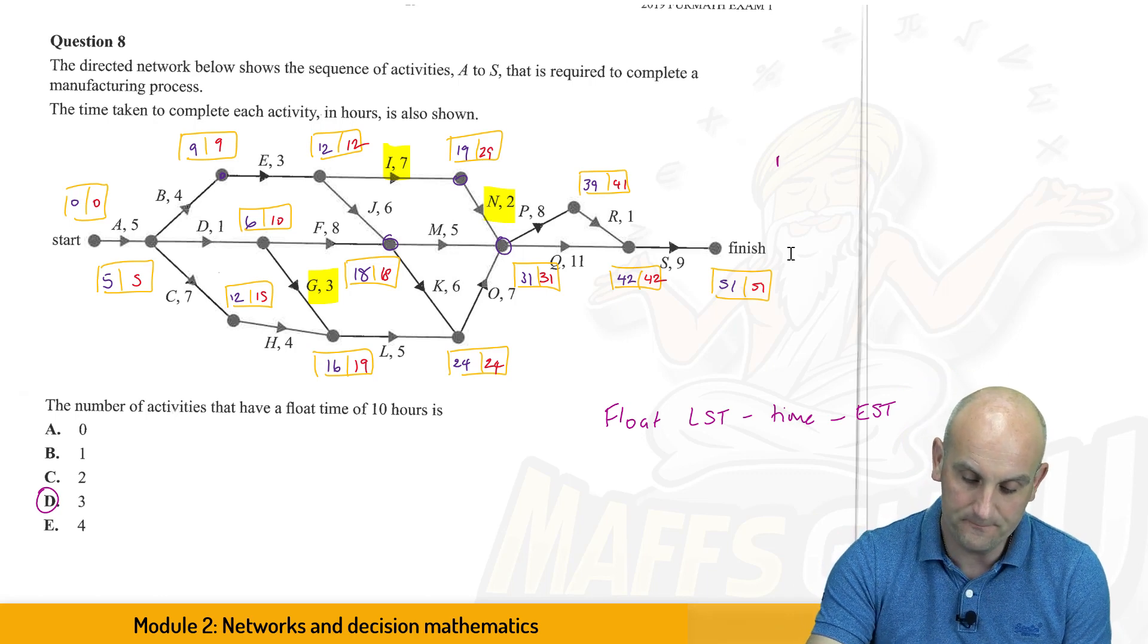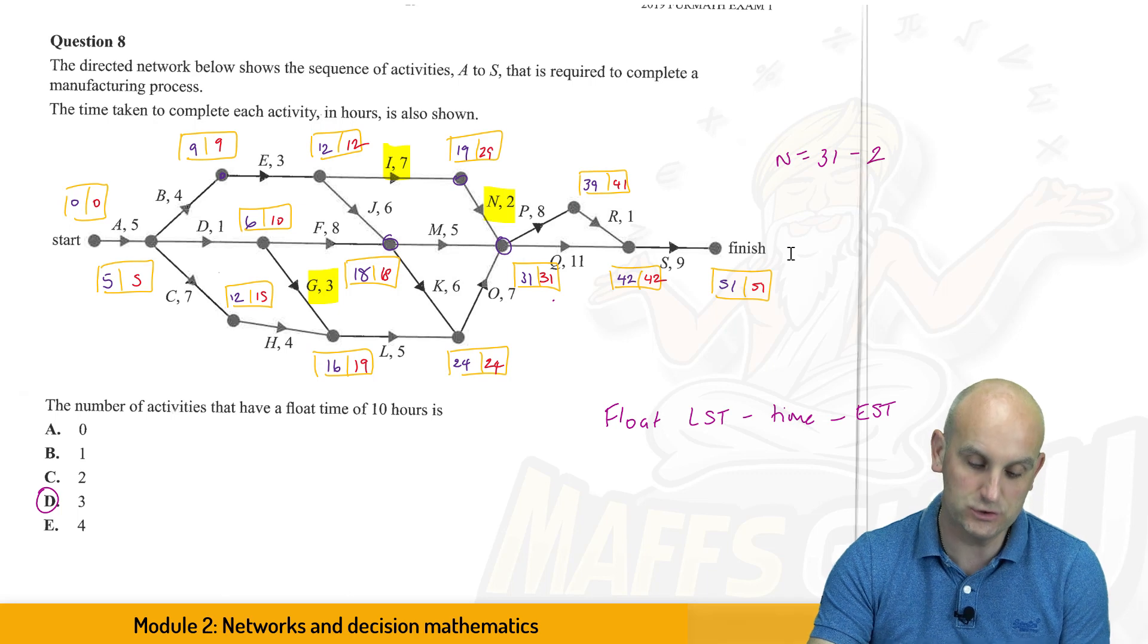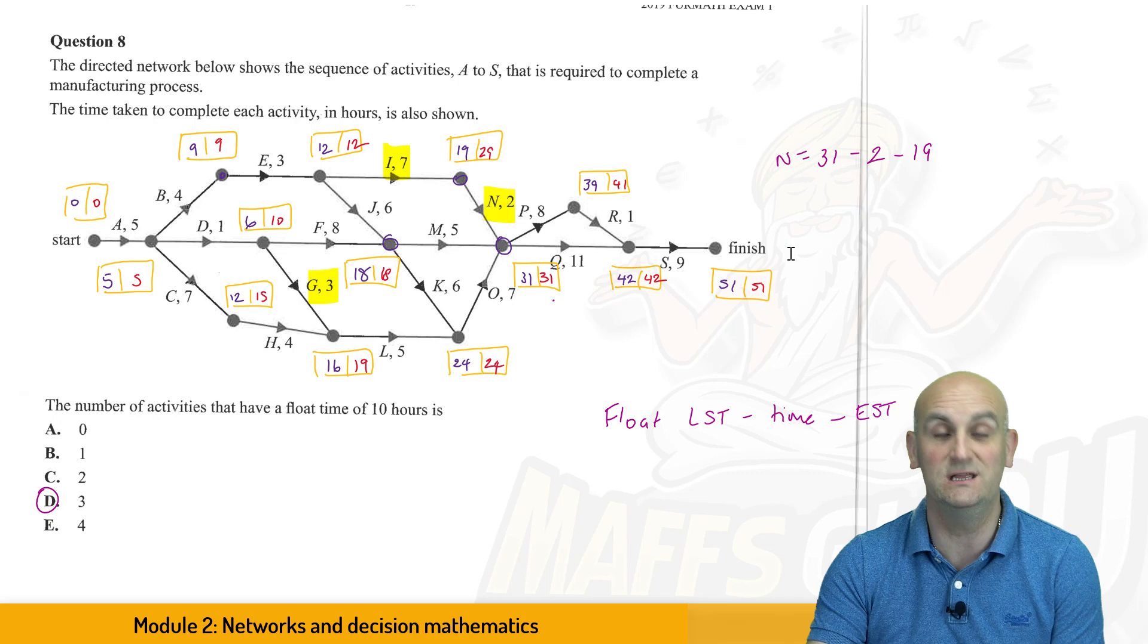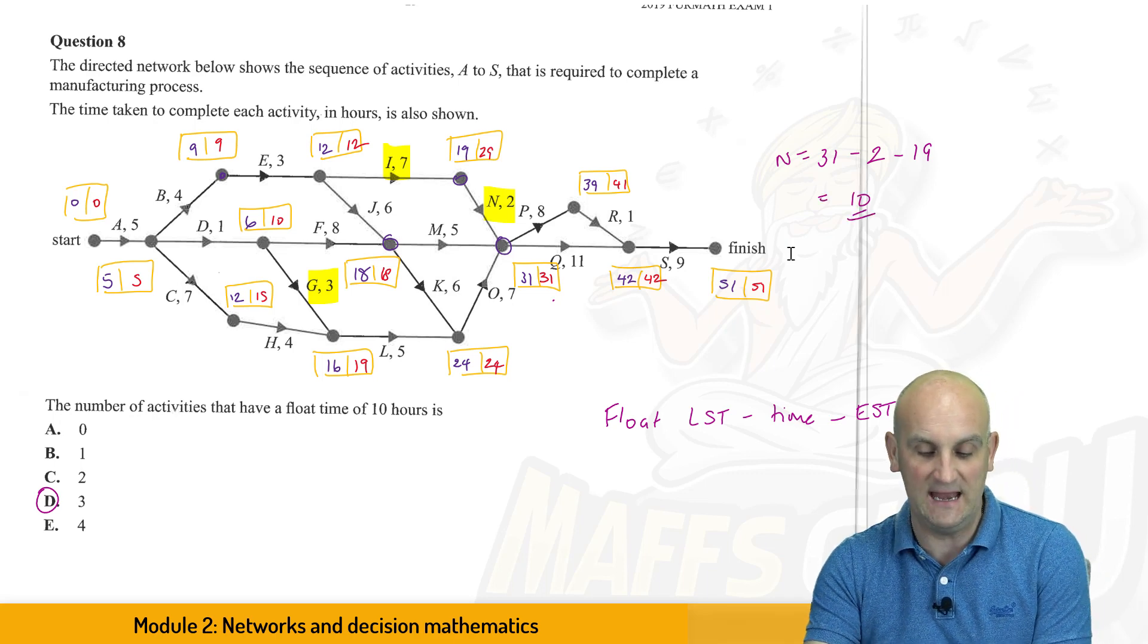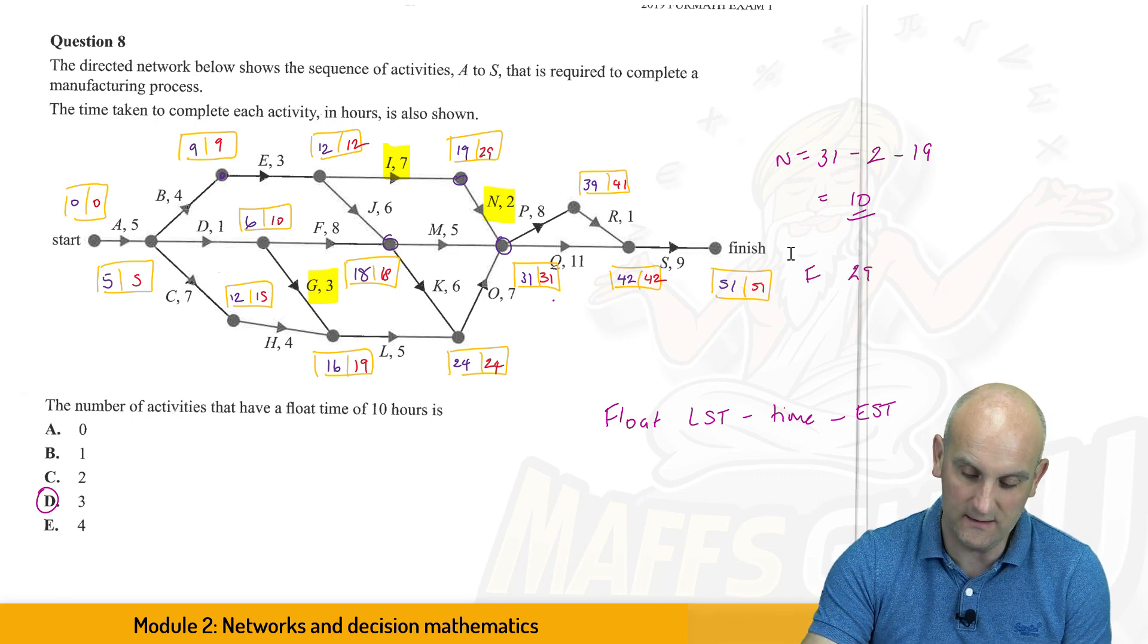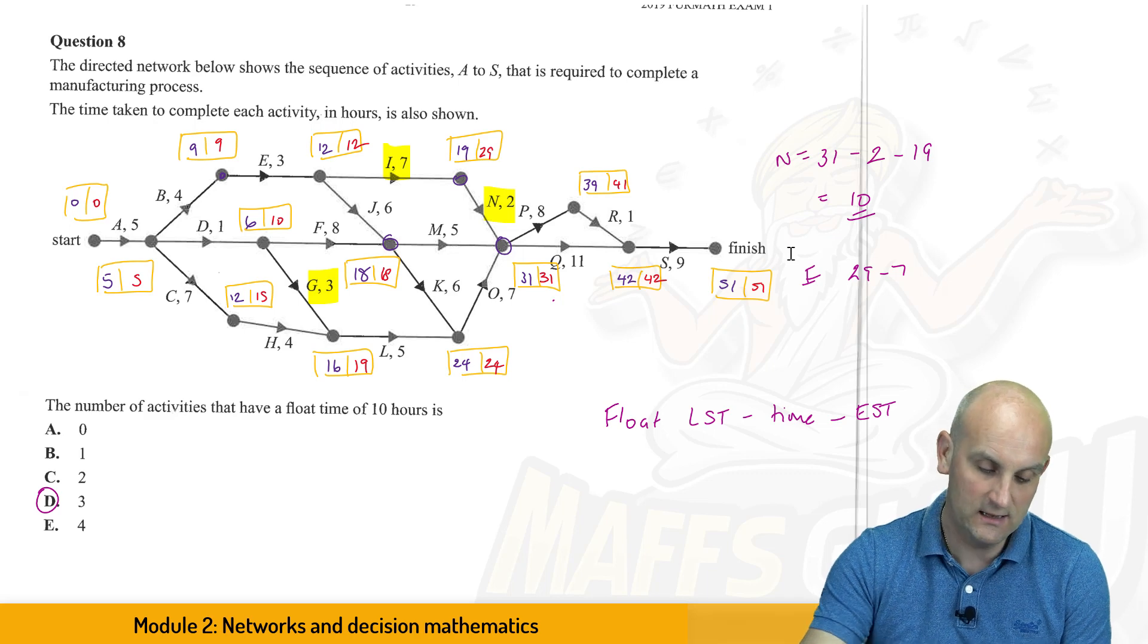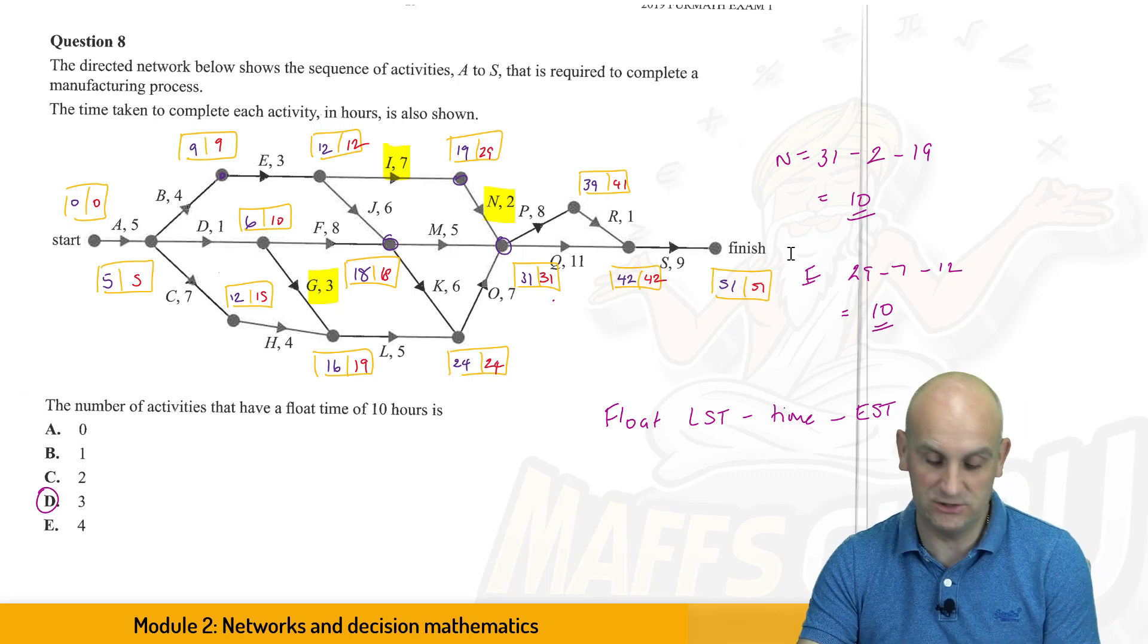So for N, we know the latest start time was 31. We know it was 2 hours in duration, and then we're going to subtract from that the 19, which is the earliest starting time, which gives me a float time of 10. So there is N. Let's just check I. So I, the latest, was 29. Subtract the 7, because that's how long it's going to take, and subtract from that the 12, which also gives me 10.